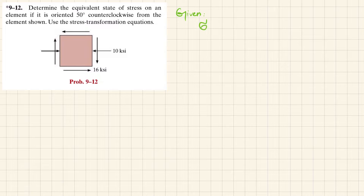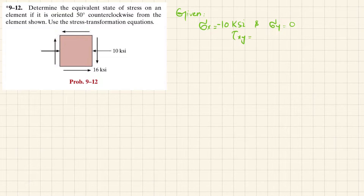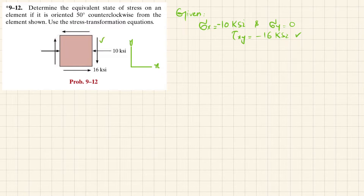From the given data: Sigma X equals 10 KSI, and since it is in compression it will be minus 10. Sigma Y is not available so it will be 0. Tau XY is minus 16 KSI. The reason Tau XY is negative is because this is your X axis, this is your Y axis, and this Tau is on the X plane but the direction of Y is downward, so it will be negative.